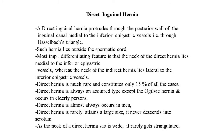The next entity is direct inguinal hernia. A direct inguinal hernia protrudes through the posterior wall of the inguinal canal medial to the inferior epigastric vessels, that is through Hesselbach's triangle. Such hernia lies outside the spermatic cord, either behind, above, or below the cord. During operation, the most important differentiating feature is that the neck of the direct hernia lies medial to the inferior epigastric vessels, whereas the neck of the indirect hernia lies lateral to the inferior epigastric vessels.